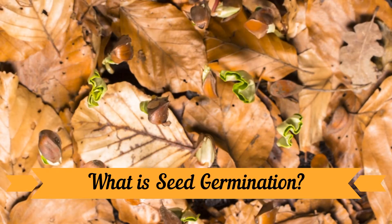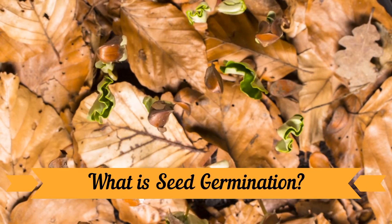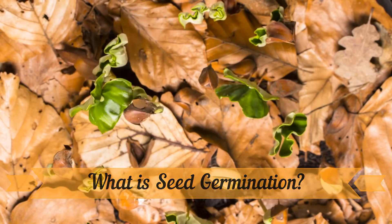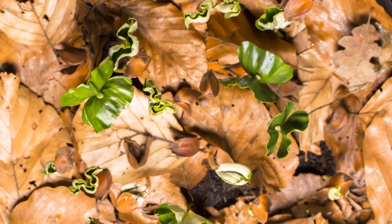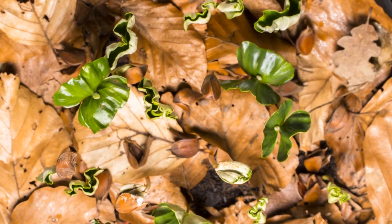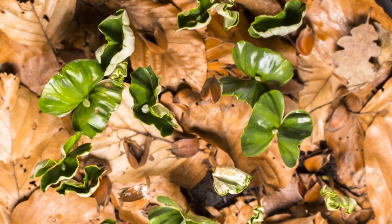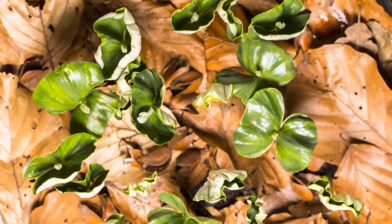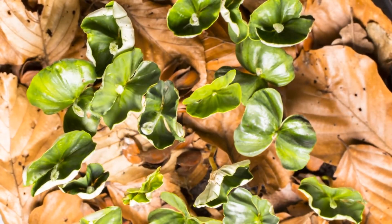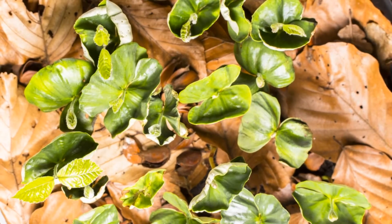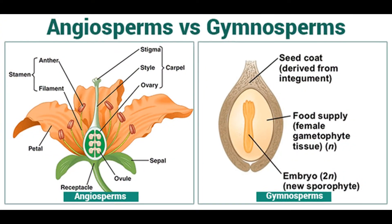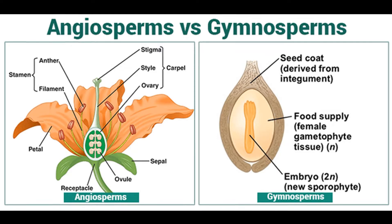What is seed germination? Seed germination is a process in which different plant species grow from a single seed into a plant. One of the most common examples of seed germination is the sprouting of a seedling from a seed of an angiosperm or a gymnosperm. Note that angiosperms are flowering plants while gymnosperms are a small group of plants that produce naked seeds, or seeds which are not protected by a fruit.